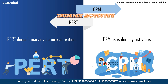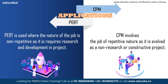PERT focuses on high-precision time and activities are not specified, hence PERT does not use any dummy activity. Whereas dummy activities are used in CPM only in case of absolute necessity, so as to maintain the logic of the network diagram. Therefore, CPM uses dummy activities to maintain the logic in the network.